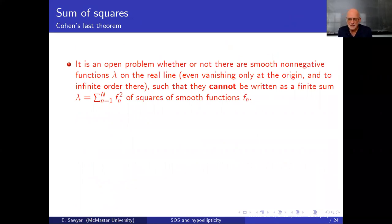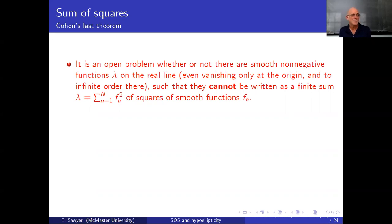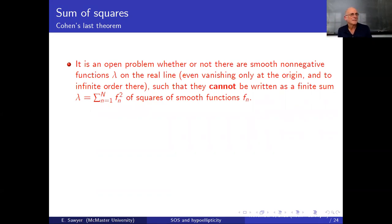Before we get to that, just to provide some levity early in the talk — Cohen's Last Theorem. I call it Cohen's Last Theorem; I don't know that anybody else does. As far as I know, it's an open problem whether there are smooth non-negative functions lambda on the real line, even vanishing only at the origin to infinite order — flat at the origin and everywhere else positive — that cannot be written as a finite sum of squares of smooth functions.